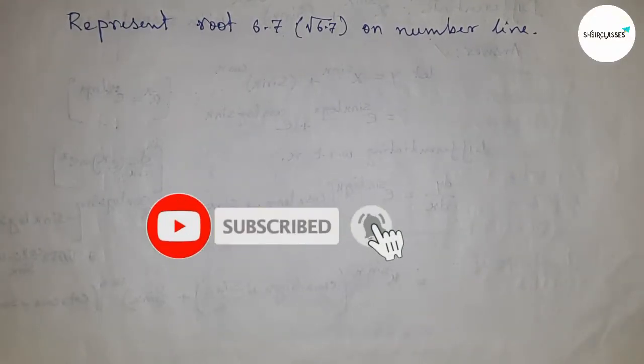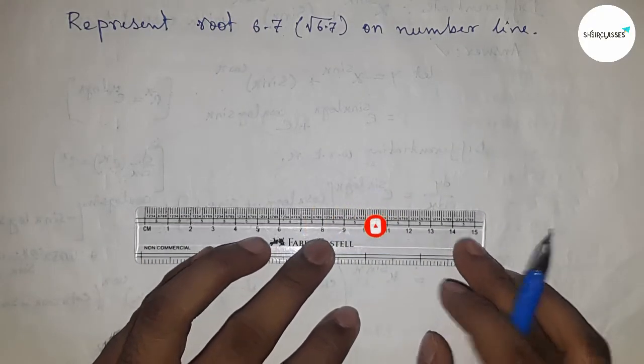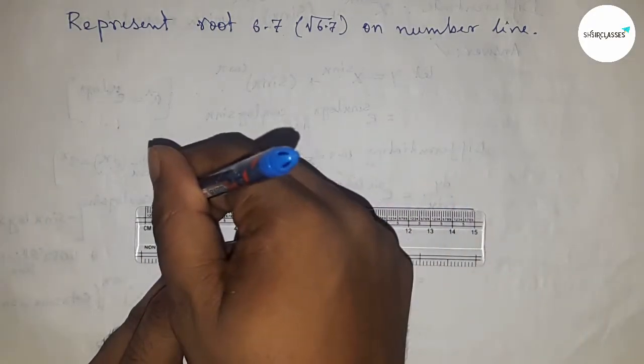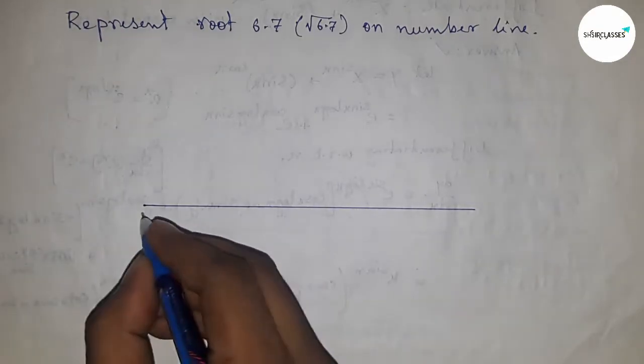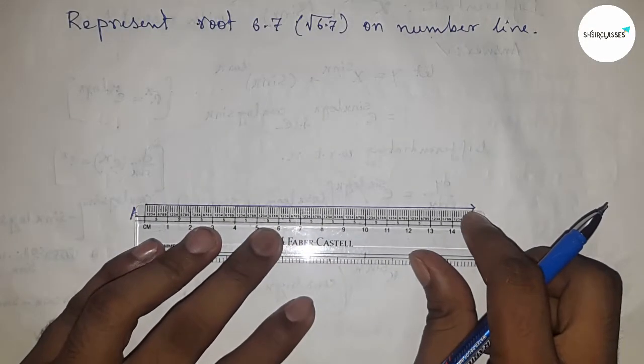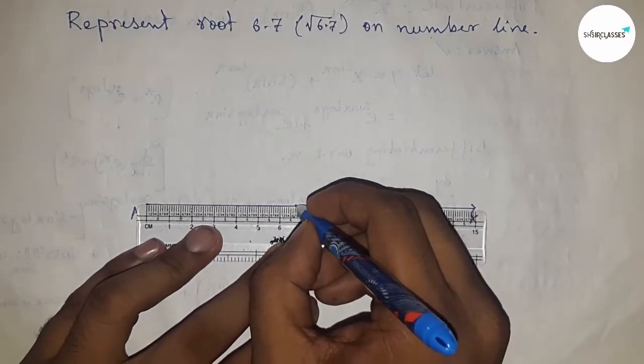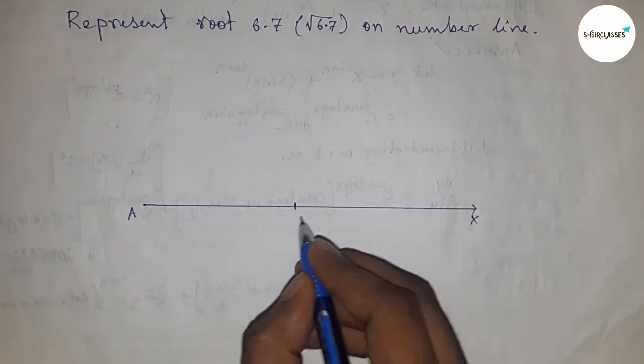Please subscribe to the channel and press the bell icon for future video notifications. First, draw a line of any length - this is the AX line. Next, take a length of 6.7 centimeters. This is point B, so AB is 6.7 centimeters.